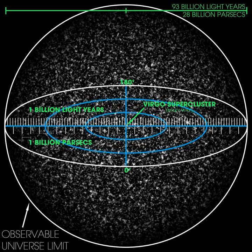Though in principle more galaxies will become observable in the future, in practice an increasing number of galaxies will become extremely redshifted due to ongoing expansion, so much so that they will seem to disappear from view and become invisible. An additional subtlety is that a galaxy at a given co-moving distance is defined to lie within the observable universe if we can receive signals emitted by the galaxy at any age in its past history. But because of the universe's expansion, there may be some later age at which a signal sent from the same galaxy can never reach the Earth — so, for example, we might never see what the galaxy looked like 10 billion years after the Big Bang, even though it remains at the same co-moving distance.